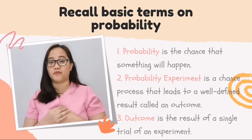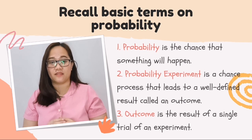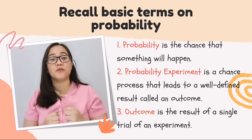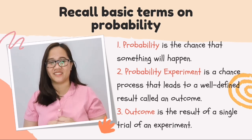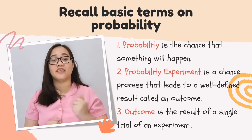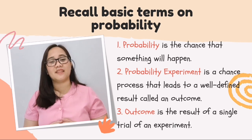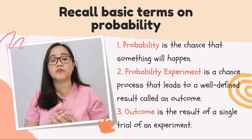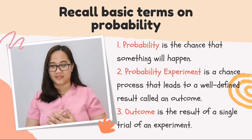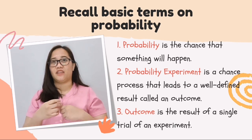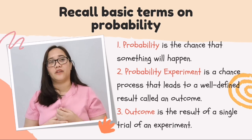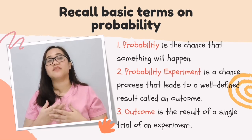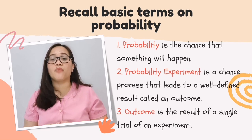Probability is about the chance of occurrence of something to happen. Next is the probability experiment, which is a chance process that will result in a well-defined outcome, just like flipping a coin or rolling a die, wherein the experiment leads to a well-defined result.